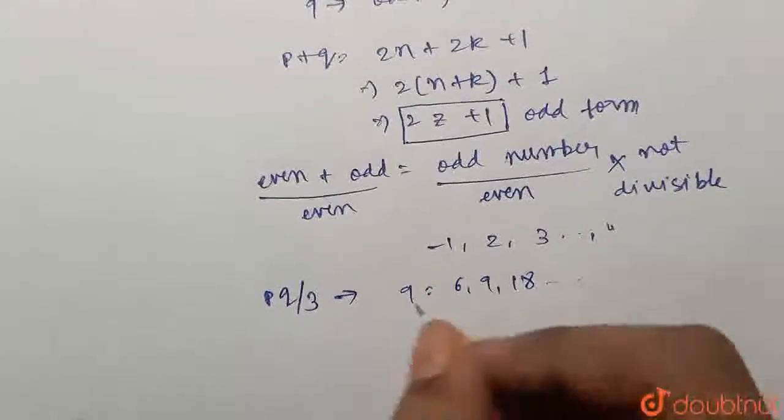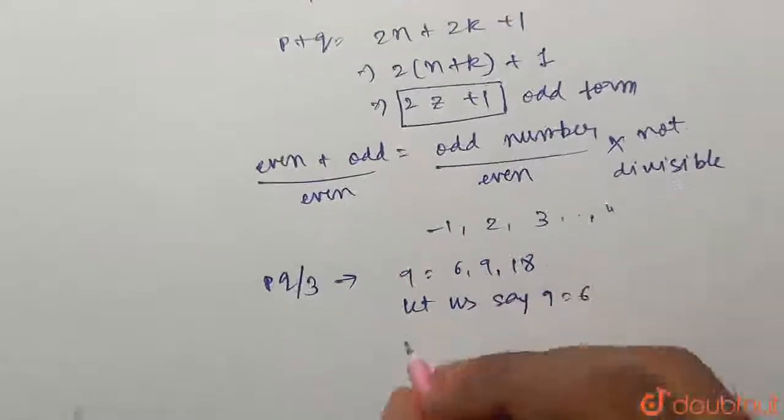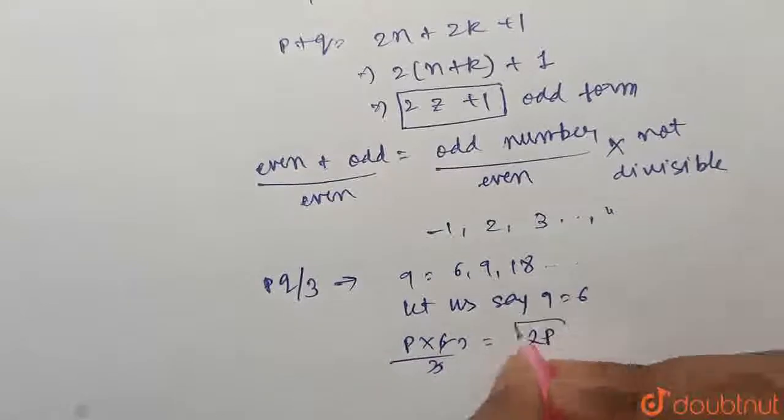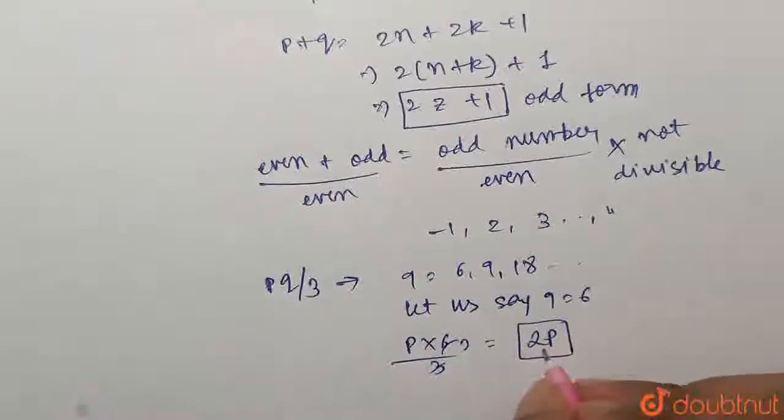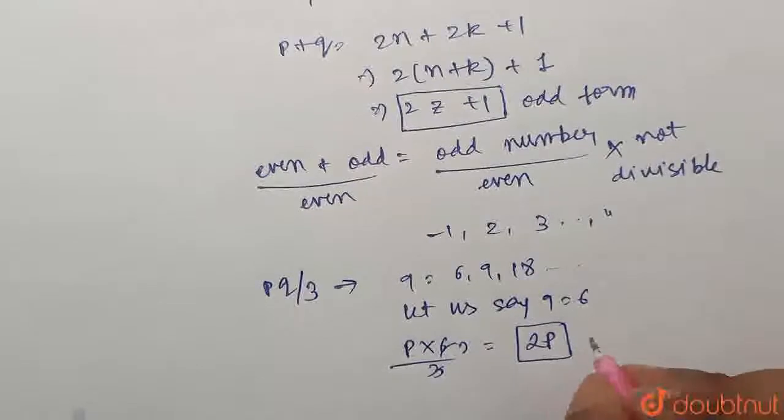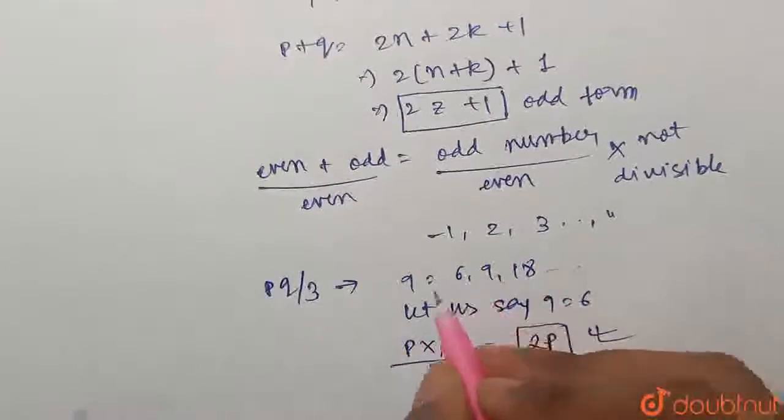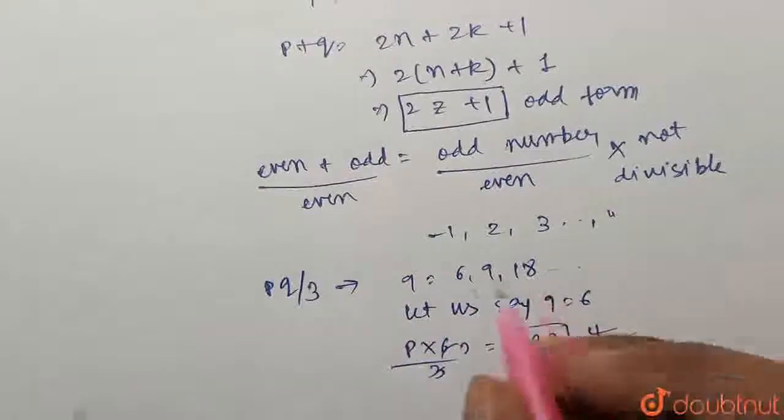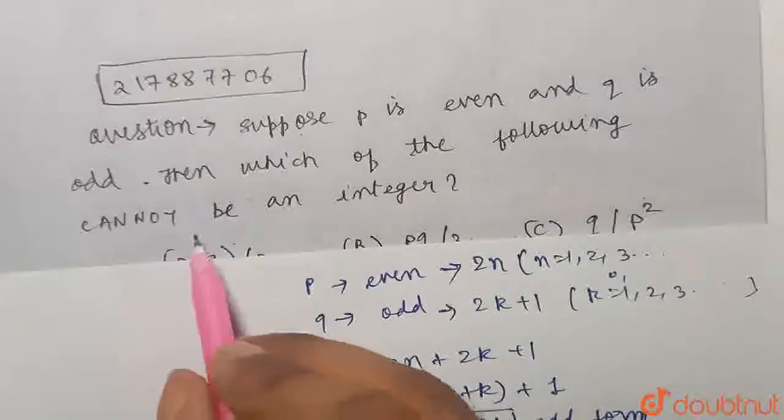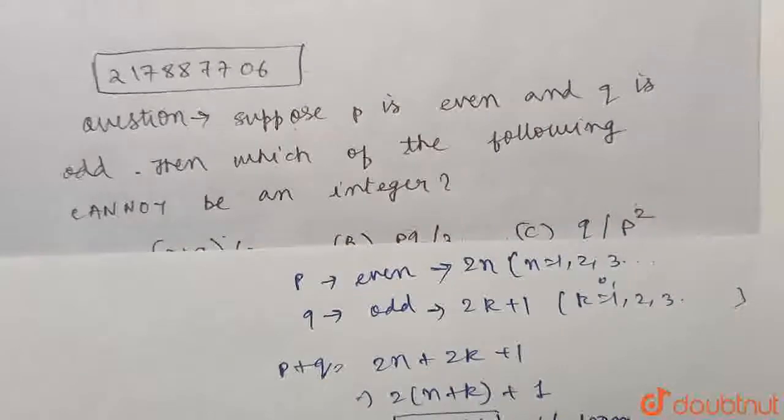Because if Q equals 6, it will be P times 6 upon 3. So this is clearly 2P, which is an integer. Because P is also an integer, if you multiply 2 with an integer, it will always be an integer. So this can be an integer if Q is divisible by 3. But in the question it asks, which cannot be an integer. So this cannot be our answer.